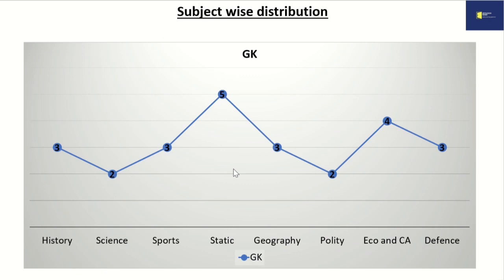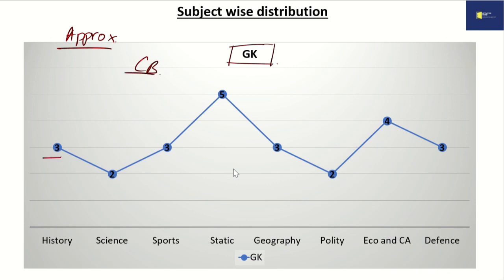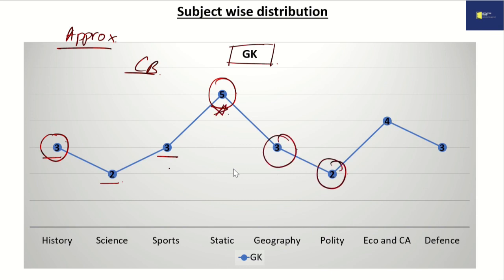When we talk about GK, it is a vast subject with many sub-subjects. Let us see how many questions come from where — these are approximate values since it is a computer-based exam. From history, around 3 questions; science, around 2; sports, 3 — very important; static GK, 5; geography, 3; polity, 2; economics and current affairs, 4; and defence, 3. Current affairs sometimes come directly, sometimes not, but indirectly they always appear because polity, geography, history, science, and sports are all related to current affairs.